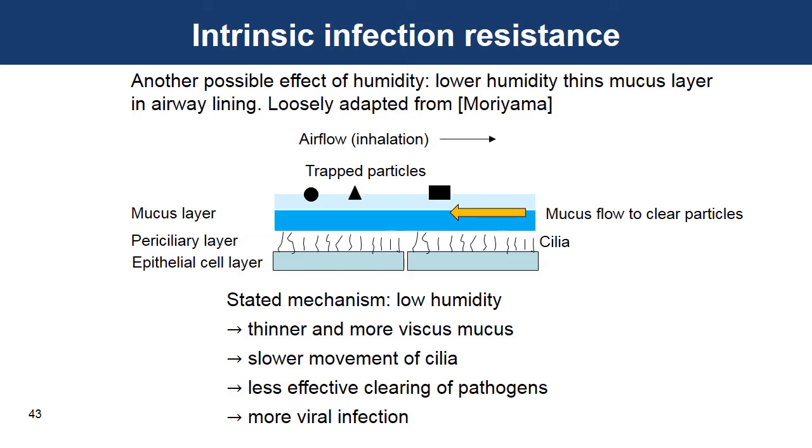Humidity can also affect the intrinsic infection resistance of the person who may or may not become infected. The mechanism for that is assumed to relate to the mucosal layer lining the person's airway. The epithelial cells in the airway have cilia. The cilia move and transport the mucus out of the person. The pathogen particles are trapped in the mucus. The stated mechanism for the effect of humidity on this process is that low humidity leads to thinner and more viscous mucus and slows the movement of the cilia. This reduces the effectiveness in clearing pathogens and leads to more infection.